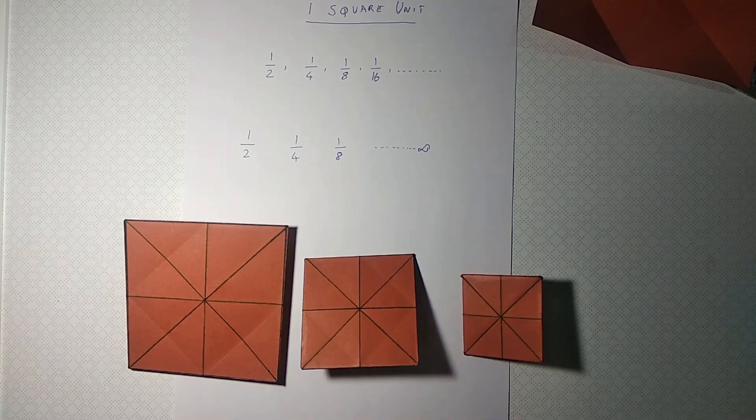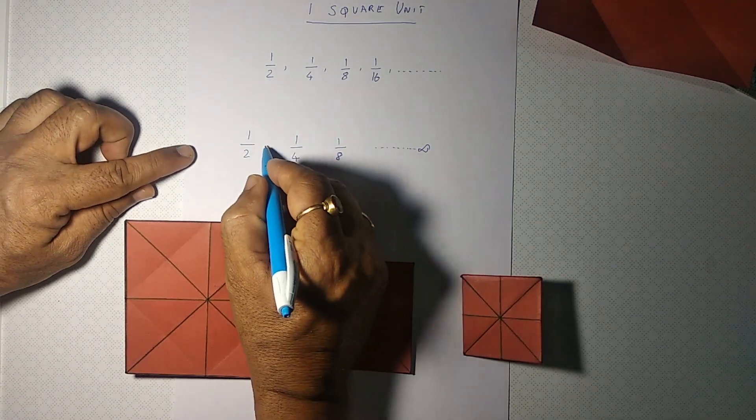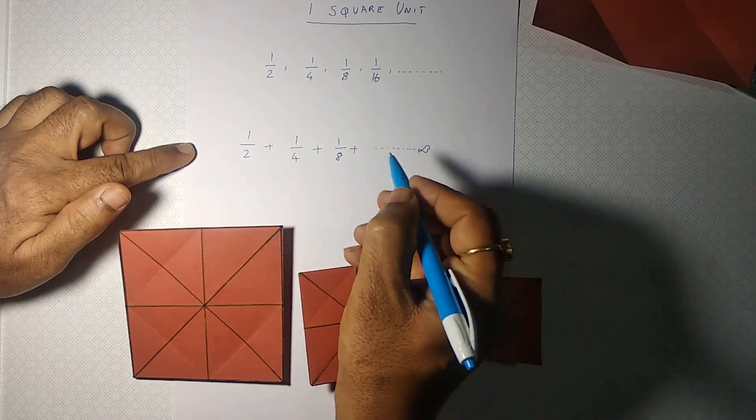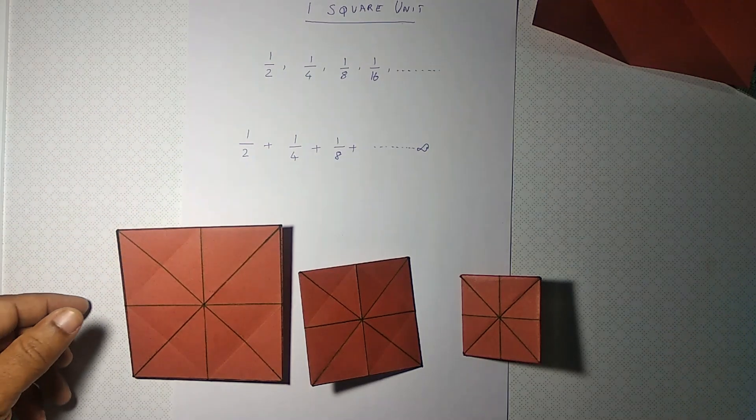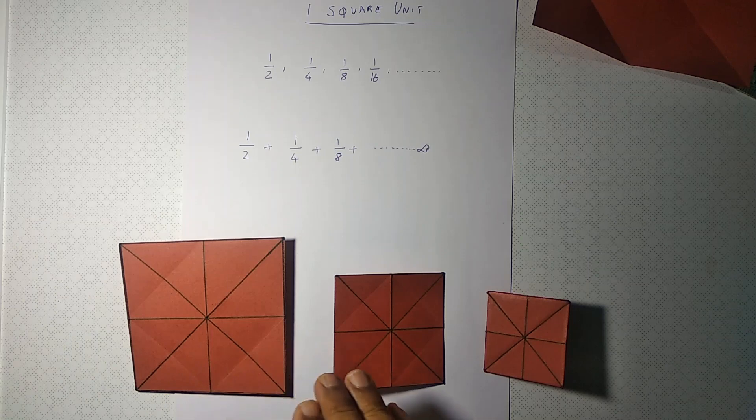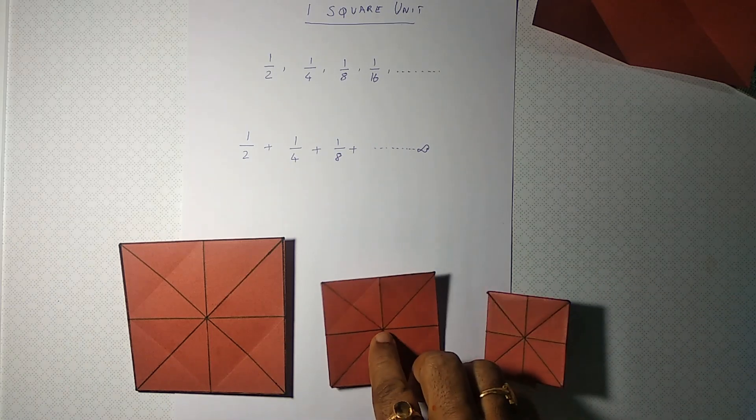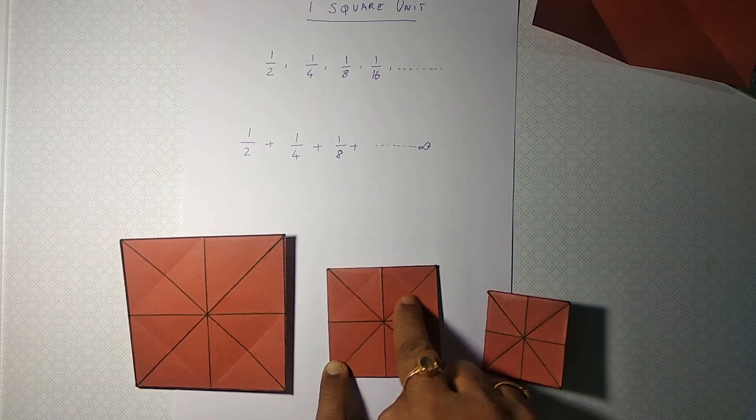Now let's add up all these fractions: 1/2 + 1/4 + 1/8 up to infinite number of terms, adding up all of them. Now let's remove the second square from this addition, and we know that there are four right-angled isosceles triangles on that.